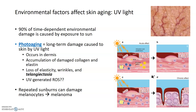In addition to changes to collagen and elastin, exposure to excessive UV light or repeated sunburns can cause damage to the pigment-containing cells in the epidermis — the melanocytes — and lead to a condition or cancer called melanoma.